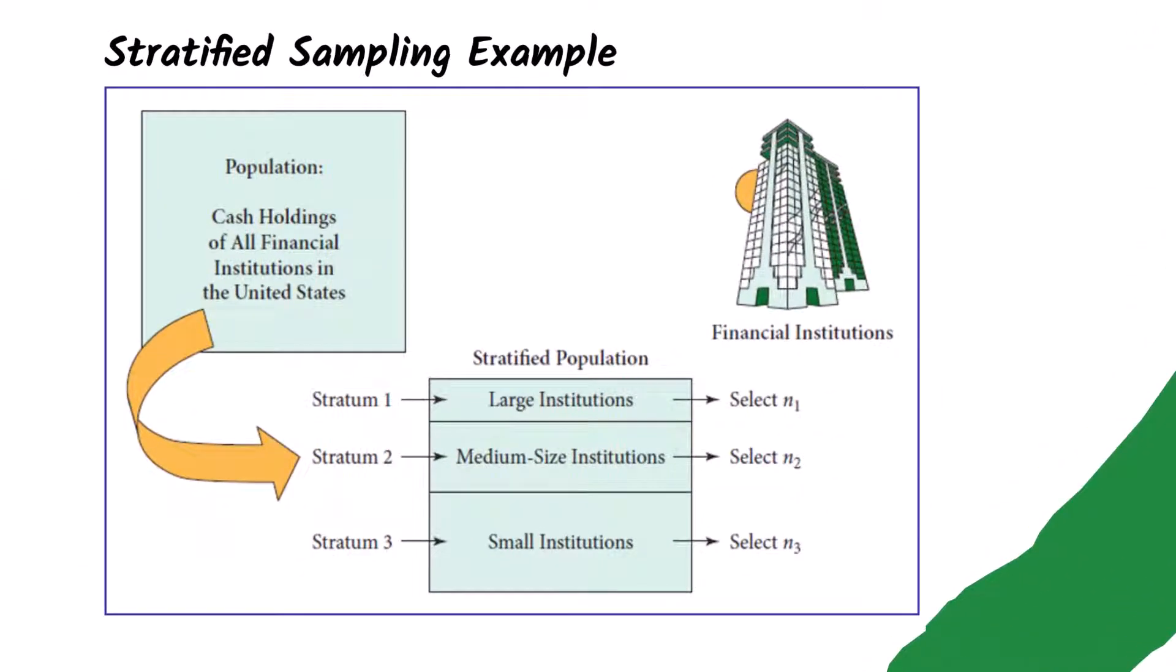Here is a business example. If we studied banks or financial institutions, we don't really have the same number of large, medium, and small institutions. To have a more even sample from each stratum, we would split our population into three strata, or subgroups for large, medium, and small, and then do a simple random sample of, say, ten institutions from each stratum.